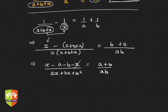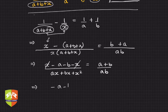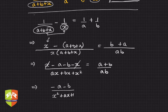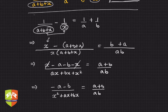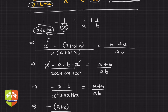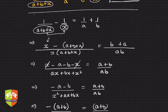Simplifying the numerator: x minus x cancels, leaving minus a minus b. So we have (−a − b) upon (x² + ax + bx) equals (a + b) upon ab. Taking minus common in the numerator, this becomes −(a + b) upon (x² + ax + bx) equals (a + b) upon ab.